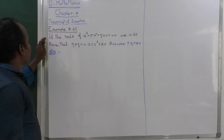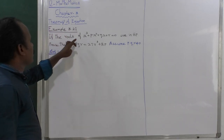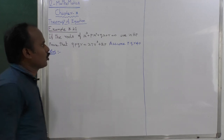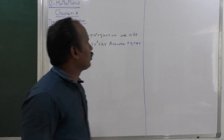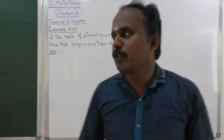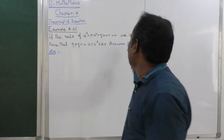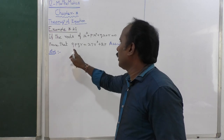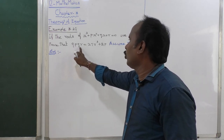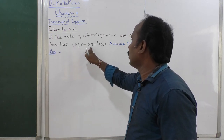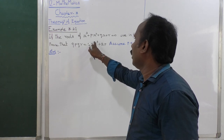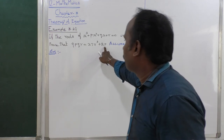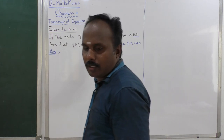Example 3.21: If the roots of x³ + px² + qx + r = 0 are in HP, prove that 9pqr is equal to 27r³ plus 2p squared... wait, that is the wrong answer, so we need to correct it.